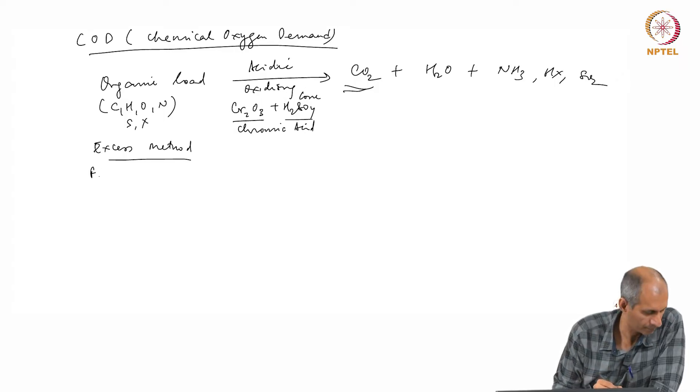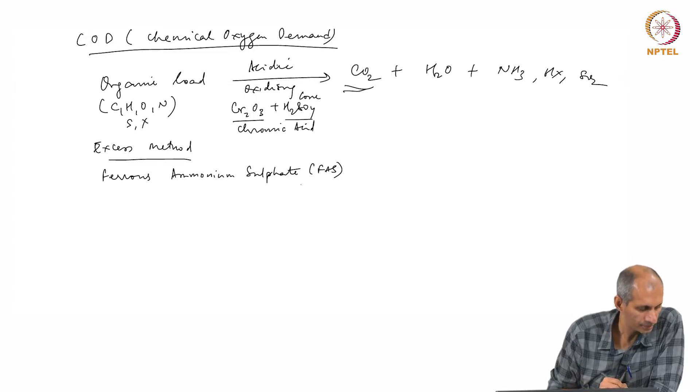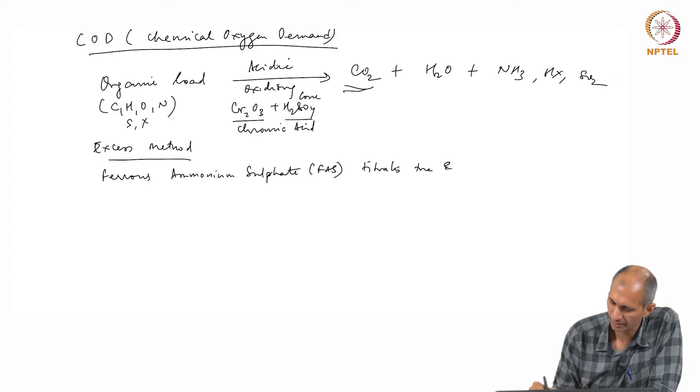What we add is ferrous ammonium sulphate, as FAS. This titrates the excess H2SO4 plus CR2O3.